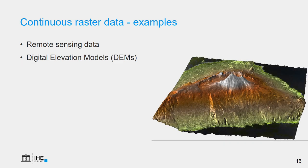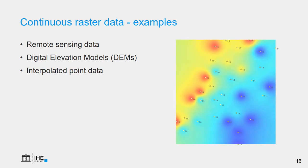Digital elevation models are also continuous data — gradients in the landscape where values can be decimal, negative, or positive. Negative values are very useful for countries like the Netherlands, which are for a large part below sea level. We can also use continuous raster data to represent interpolated point data, such as temperatures.